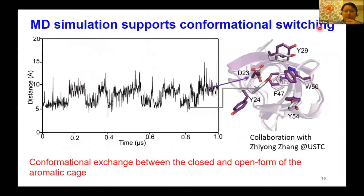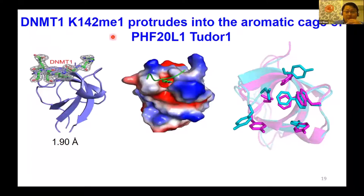To see what the minor state looks like, we ran MD simulations in collaboration with Professor Zhang at USTC. The simulations demonstrate two different states: one is the ground state, another is a more open state. We then solved the crystal structure of the complex with the DMT peptide and found that the peptide does protrude into the aromatic cage, with a remarkable rearrangement of aromatic residues. This rearranged conformation is similar to what we observe in the MD simulation.